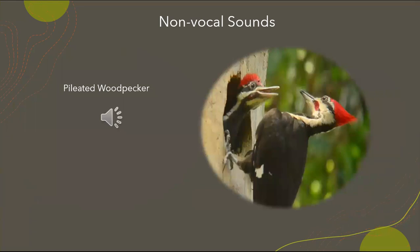Before we get into songs and calls, I want to point out that there is also non-vocal sound production in birds. Two examples are drumming and the use of feathers. Focusing on woodpeckers, the tempo, rhythm, and duration of drumming patterns are species-specific. By learning the drumming pattern of woodpeckers you can identify woodpeckers that are not vocalizing. What we're going to do now is listen to the pileated woodpecker and then compare it to a downy woodpecker.